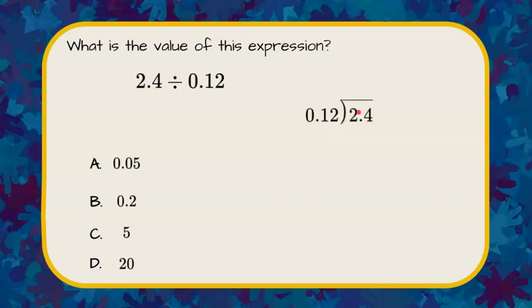So our dividend goes underneath the division symbol, and our divisor is on the outside. So 2.4 is being divided by 0.12.